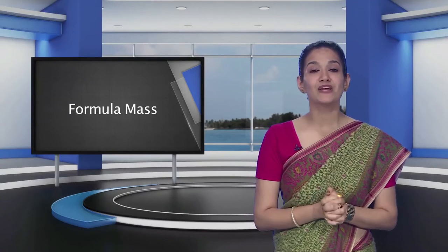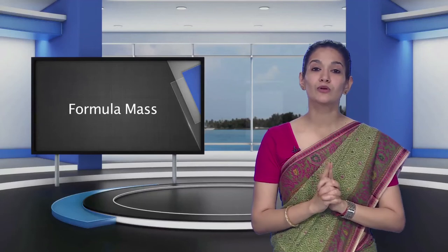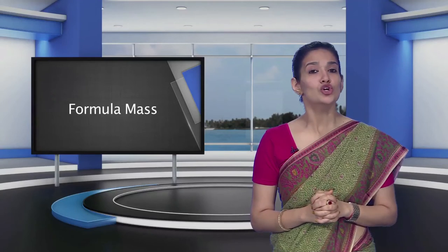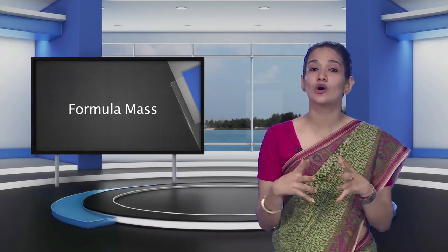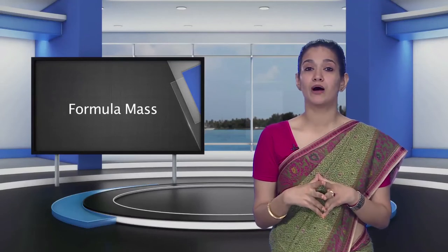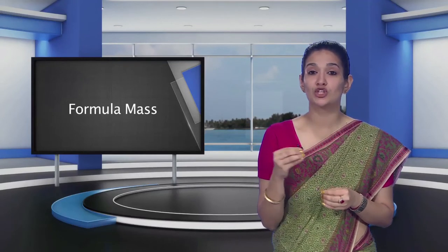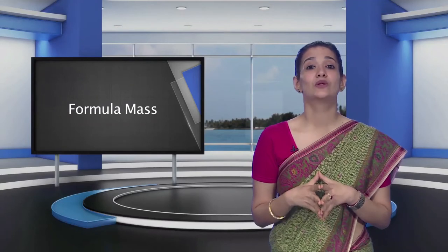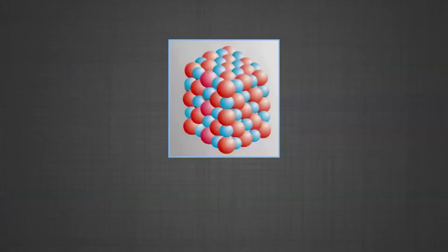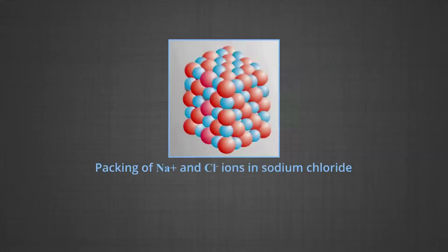We'll now learn about formula mass. Some substances, especially ionic compounds such as sodium chloride (NaCl), potassium nitrate (KNO₃), etc., do not contain discrete molecules as their constituent units. In such compounds, positive ions such as sodium or potassium, and negative ions such as chloride and nitrate, are arranged in a three-dimensional structure. The arrangement of sodium and chloride ions in NaCl, and the packing of Na⁺ and Cl⁻ ions in the sodium chloride structure, is shown in the figure.